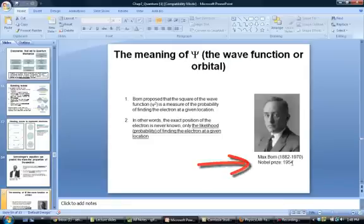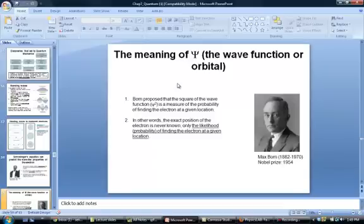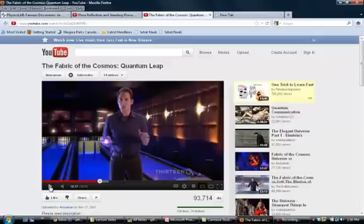Max Born who won the Nobel Prize in 1954, he was the one to propose that this wave function basically allows us to calculate the probability of finding the electron at a particular position. So if you imagine the atom to be a space and inside it there is an electron. What you can do is you can say okay I want to know what the position of the electron is at a particular location. I can't know that. What I can know is that at this location what is the probability of finding the electron. So I want to wrap this up by showing you what exactly the Born interpretation of the wave function is.